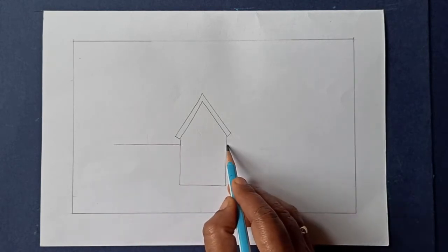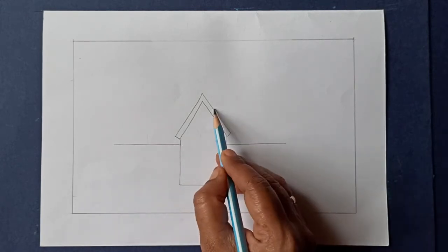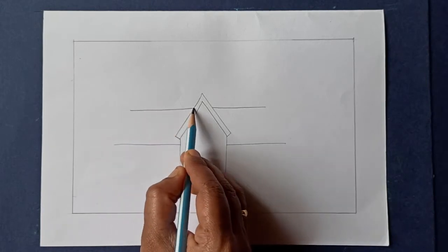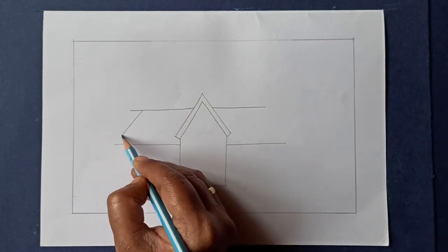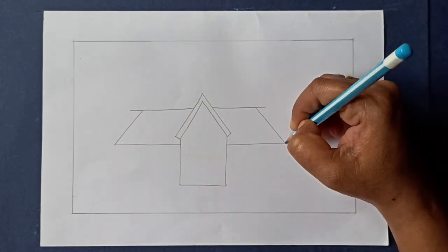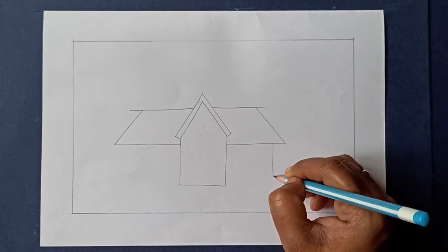Let's draw the roof now. Follow the lines. Connect these lines with two slant lines. Draw two straight lines.